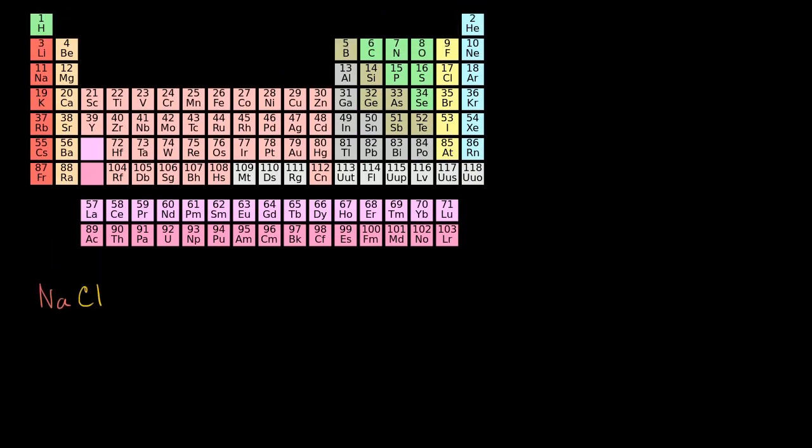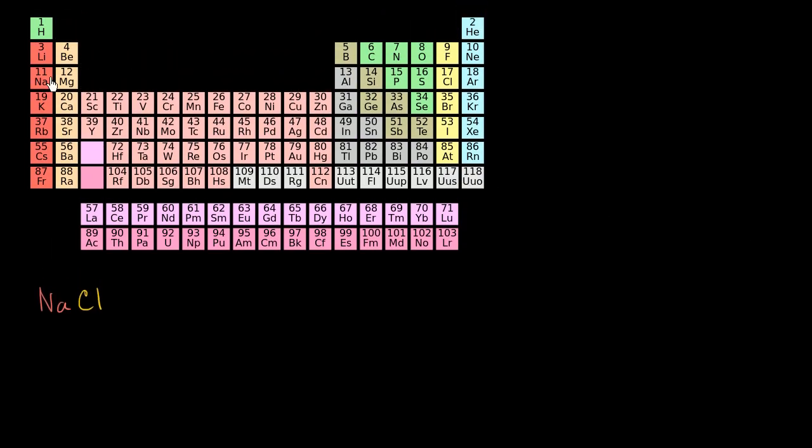Let's think a little bit about the molecule sodium chloride. If we look at the periodic table right over here, we see that sodium is a group one element, an alkali metal. It has one valence electron.